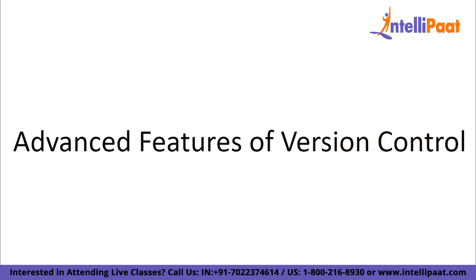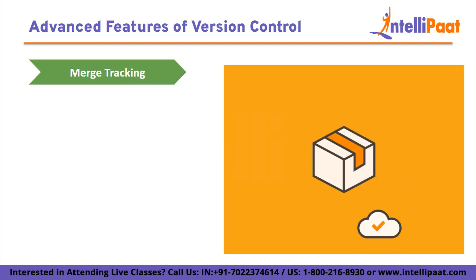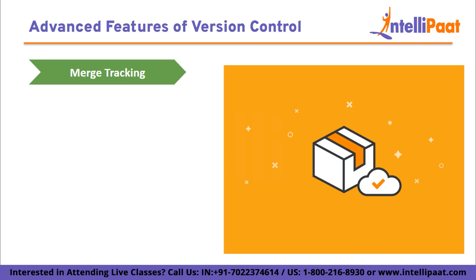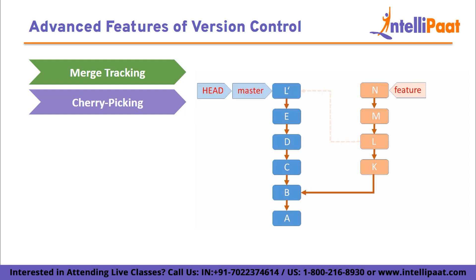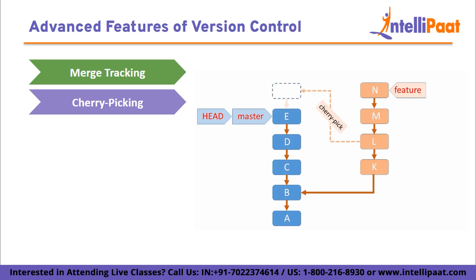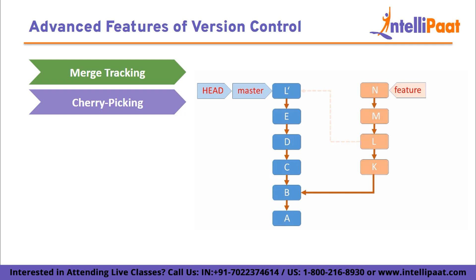Advanced features in version control systems enhance productivity, flexibility, and efficiency. They provide additional capabilities beyond basic functionality, allowing for more sophisticated version control workflows. Merge tracking: merge tracking is a feature that helps manage complex merging scenarios. It allows the system to keep track of which changesets have been merged into different branches, making it easier to identify and handle merge conflicts. Cherry picking: cherry picking allows you to select specific changes from one branch and apply them to another. This feature is useful when you want to include specific changes or fixes from one branch to another without merging the entire branch.